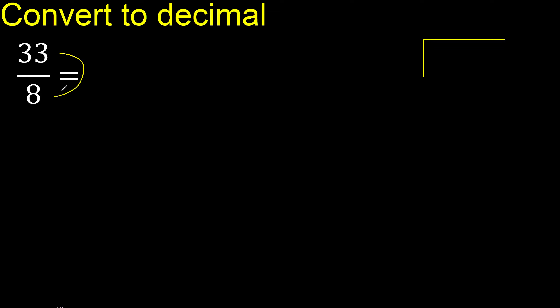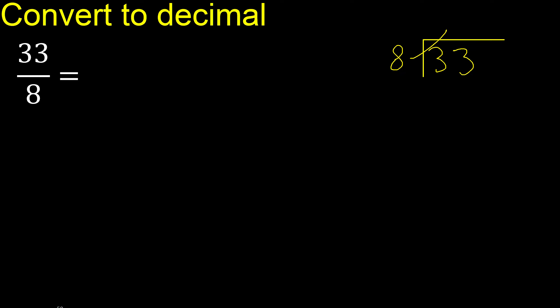33 divided by 8. 3 is less, therefore next. 33 is not less, therefore with 33: 8 multiplied by which number is nearest to 33 but not greater? 8 multiplied by 5 is 40 — 40 is greater. 8 multiplied by 4 is 32 — 32 is not greater. So 33 minus 32 is 1. Next.